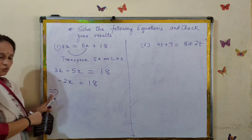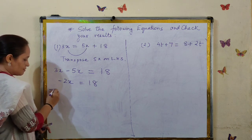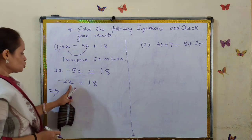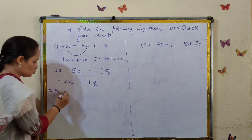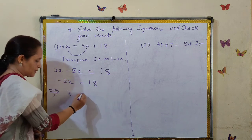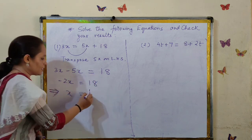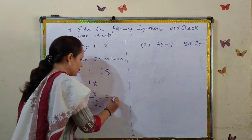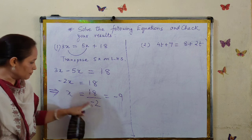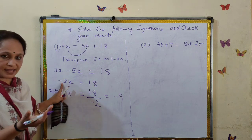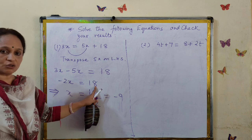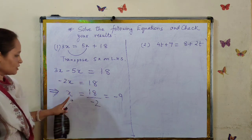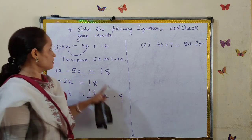Now to find the value of x, we divide both sides by minus 2. Dividing both sides by minus 2 gives us the value of x.